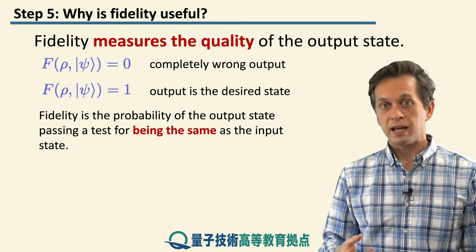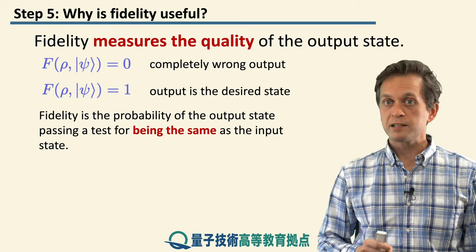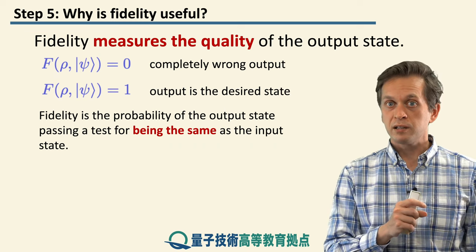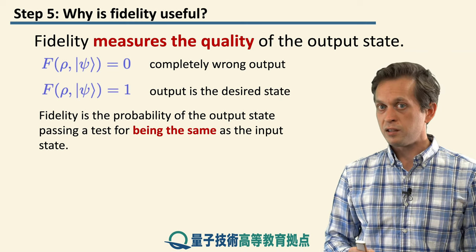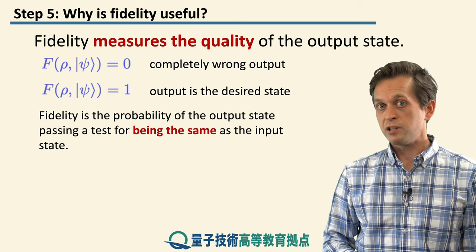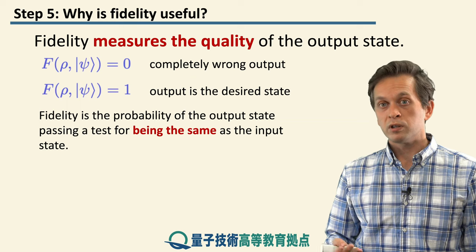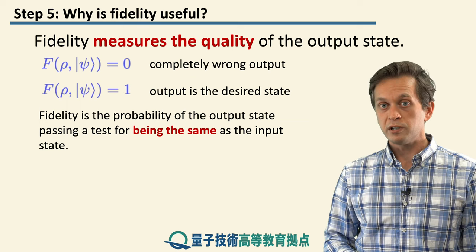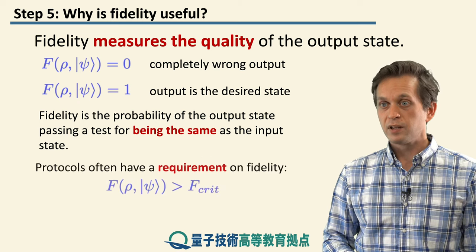And often, fidelity can be interpreted as the probability that the state that we have at the output actually passes a test for being the desired output state. What this means is that even if you get some state which has fidelity less than 1, it's not a completely useless state, and you can still use it in your protocol. Although, not with certain certainty, you will have some probability of failing.